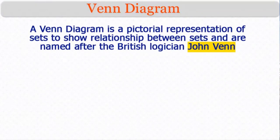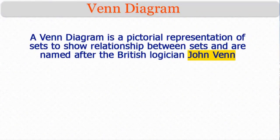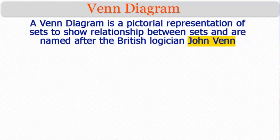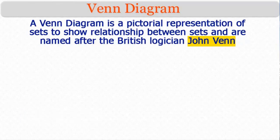A Venn diagram is a pictorial representation of sets used to show relationships between sets. Venn diagrams are named after the British logician John Venn. In a Venn diagram, sets are represented by enclosed areas in a plane.